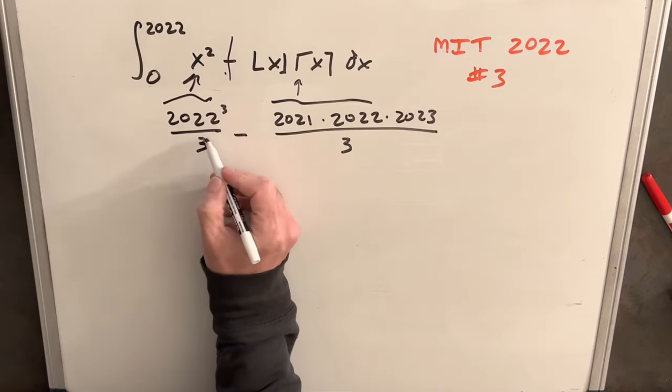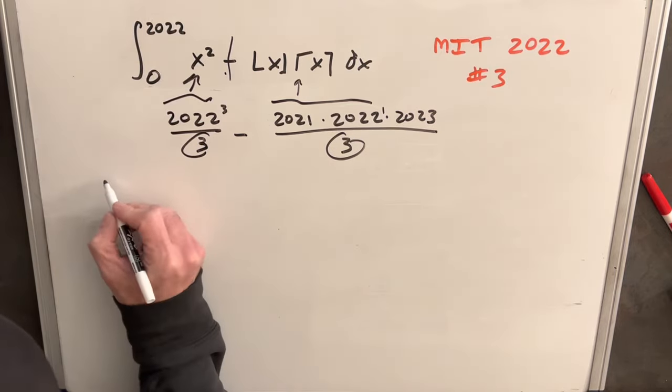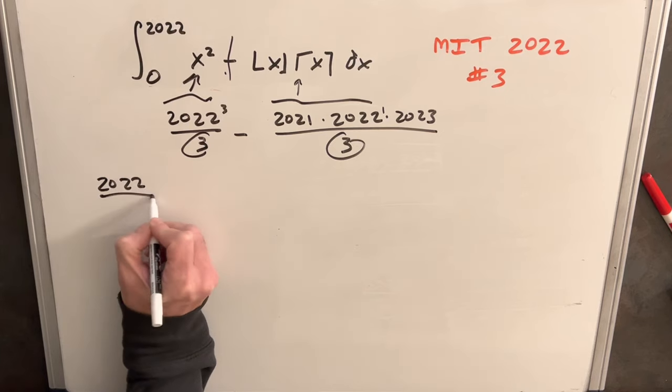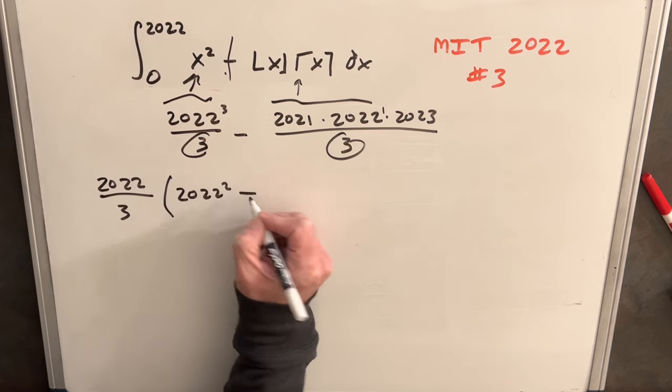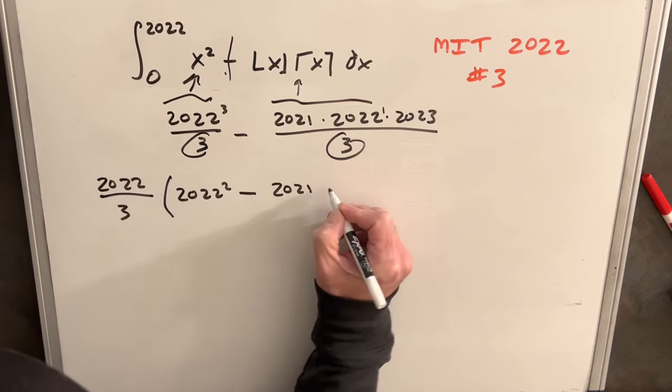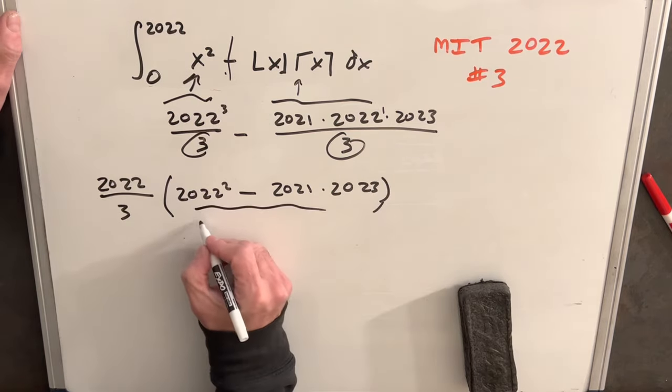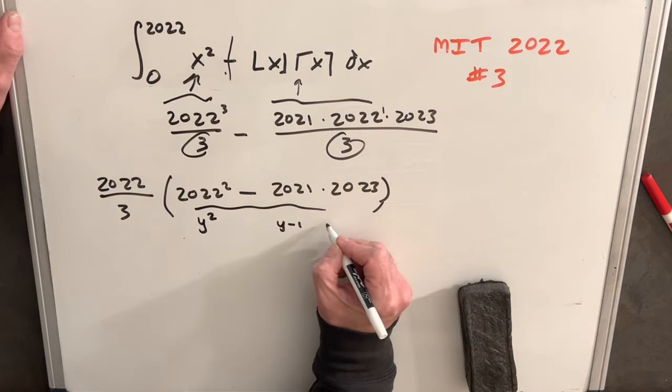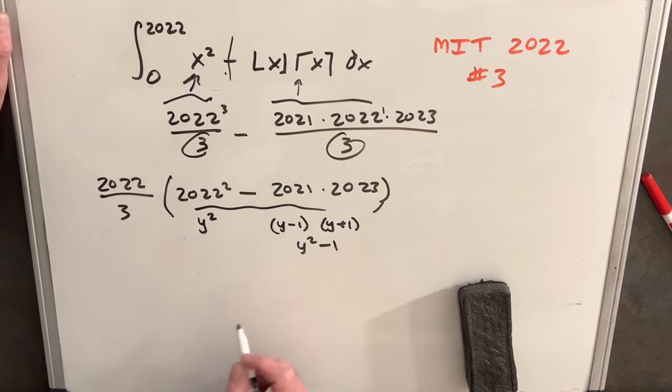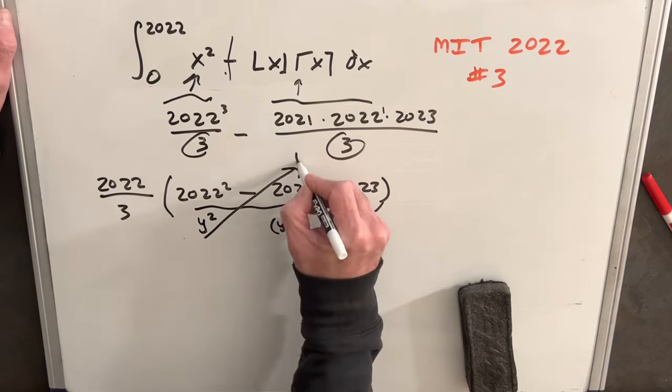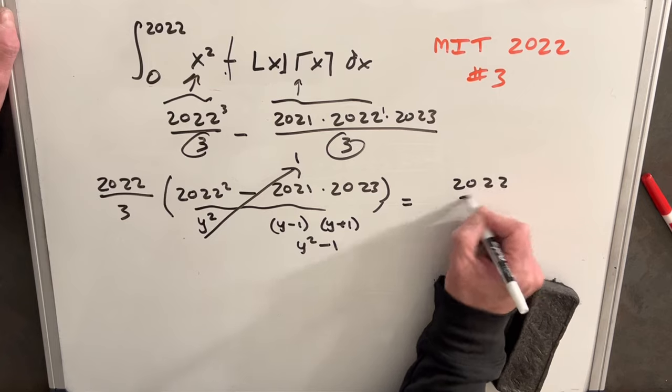I notice I can factor out a 3 from the denominator and also a 2022 from the numerator. We'll have 2022 over 3 times this, what we have left is 2022 squared. And here, all we're going to have left is 2021 times 2023. You'll notice this is in a familiar format. If this is y squared, this is y minus 1 times y plus 1. So this is y squared minus 1.